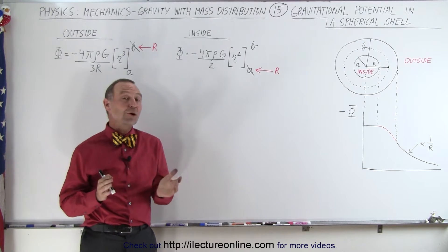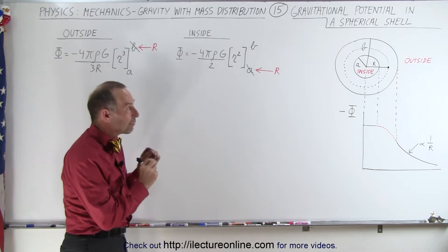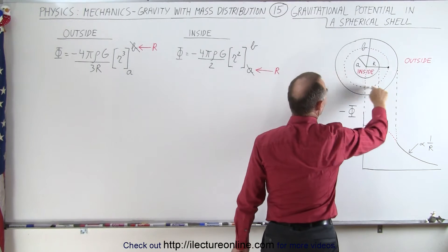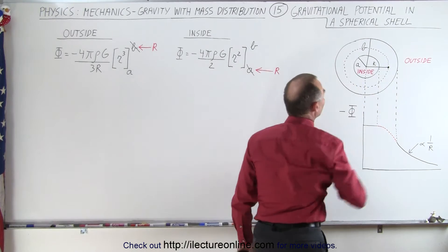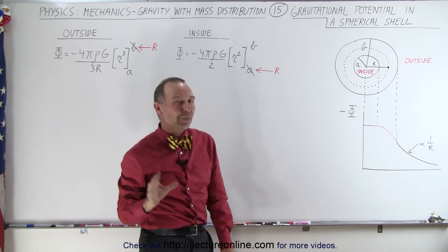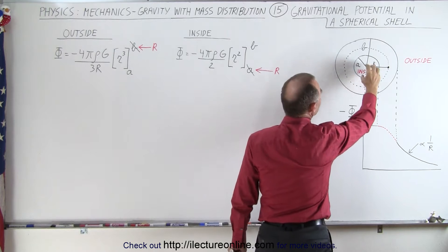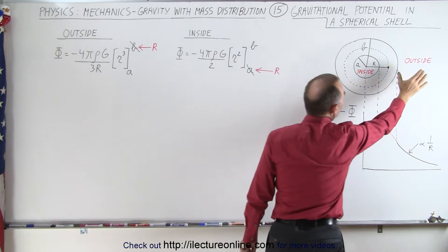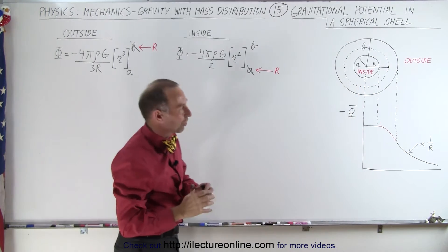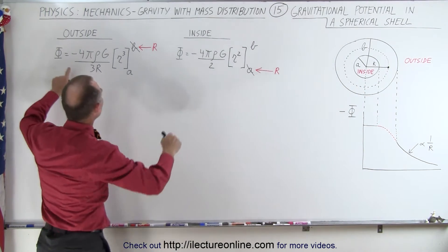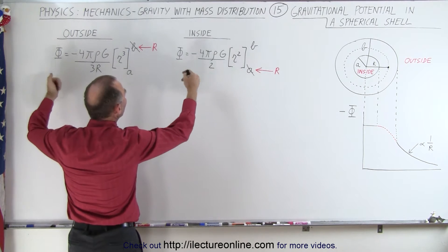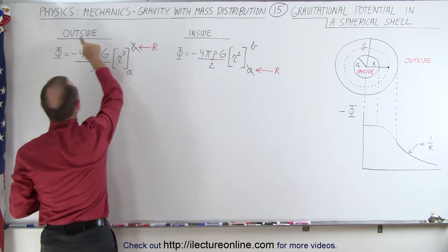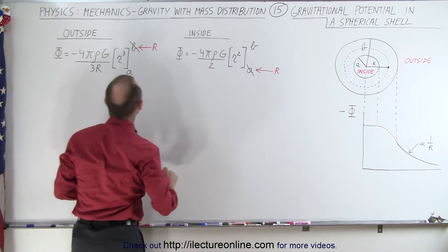Welcome to Electron Line. In this video we're going to try to determine the gravitational potential in the region between A and B of the spherical shell — inside the material of the spherical shell itself. In the previous two videos we found the gravitational potential inside the cavity and outside the spherical shell, and here we have the two equations we ended up with when we integrated to determine the gravitational potential outside the shell and inside the cavity.